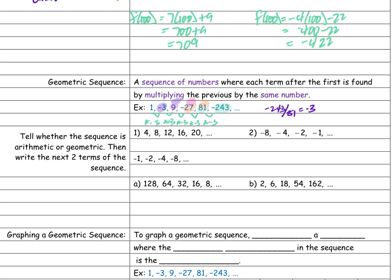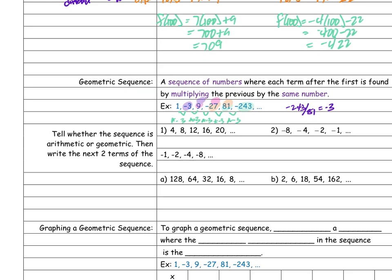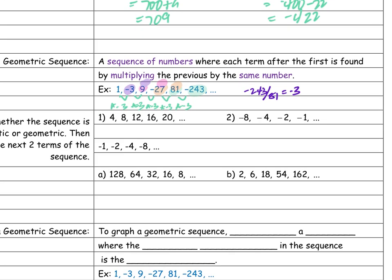Tell whether the sequence is arithmetic or geometric, then write the next two terms. Is this sequence arithmetic or geometric — am I adding the same number every time, or multiplying the same number every time? If it's geometric, the numbers get bigger a lot faster, so they're much wider apart. These numbers seem to stay about the same distance apart, so it's probably arithmetic.